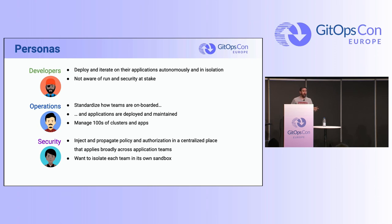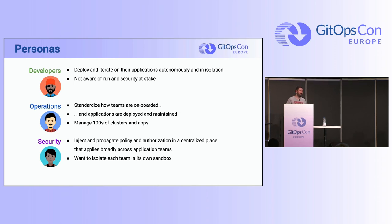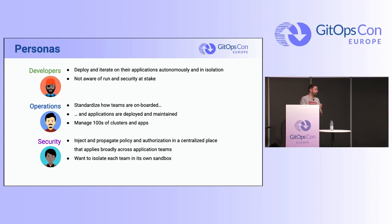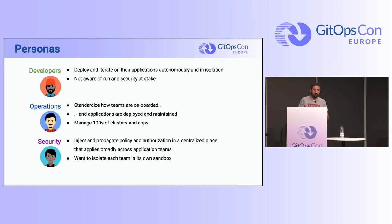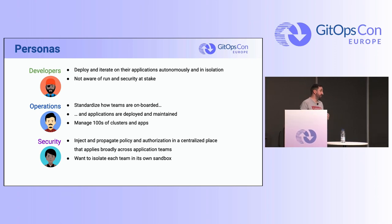On the other side, we have operations teams who know how to run applications, do monitoring, alerting, scalability, and resiliency — managing hundreds of clusters across the whole company. The security team wants a centralized way to deploy policies, authorization, and authentication. They want to isolate each team in its own sandbox and enforce policies like security accounts, network ingress/egress policies.